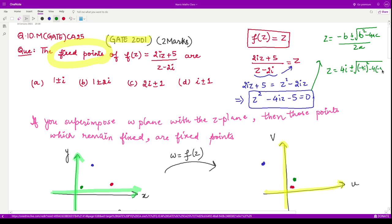So when you solve this, you would have 2i ± 1. So the fixed points which are obtained using this expression are 2i ± i. Accordingly, option C is the correct option. Well, that's it for this video. I hope you understood this concept of fixed points. Thank you.